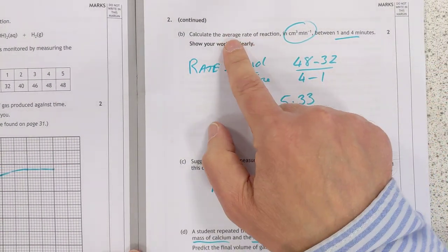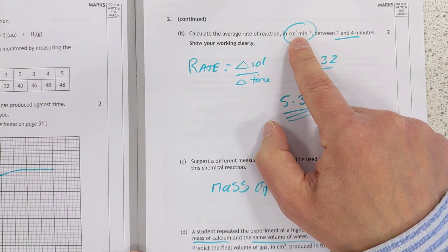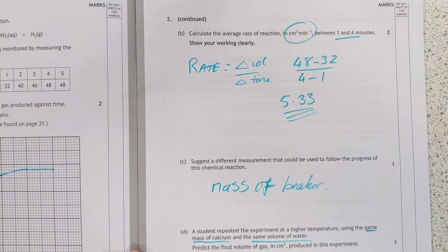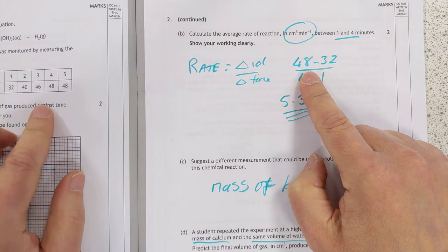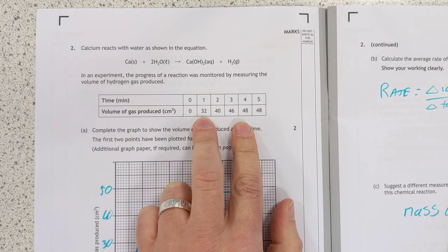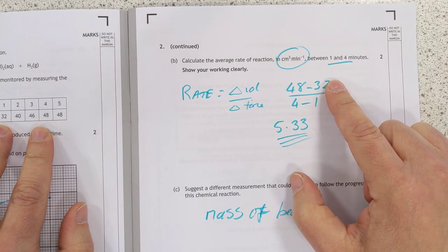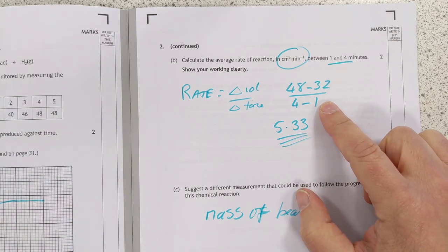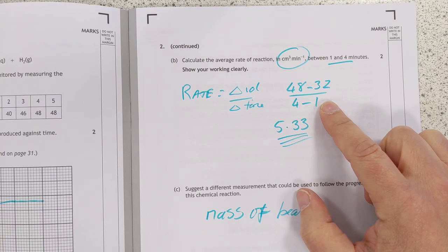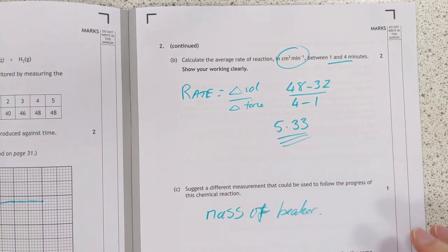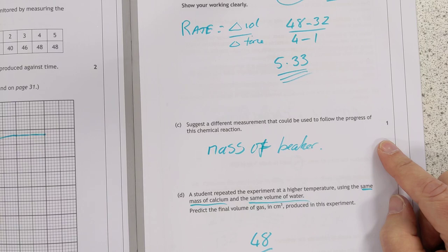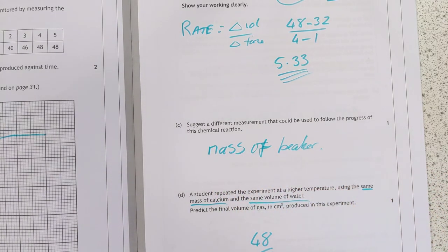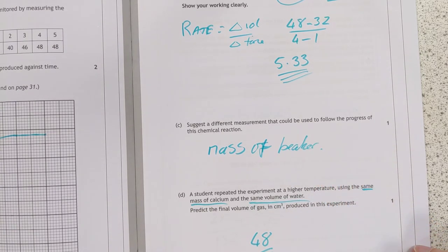Number 2b, reaction rate. They've actually given you the unit here, which is unusual. Usually they get you to work that one out. So they're definitely being generous in this paper so far. The rate is equal to the change in volume over the change in time, which, according to my graph, according to these numbers here. That's how you work it out. Between 1 and 4 minutes. It's 48, take away 32. Perhaps you might have fallen into the trick of dividing it by 4 in the bottom line there, which is an interesting one. But it is, technically speaking, only over 3 minutes, which comes out to be 5.33. That's an unusual number.